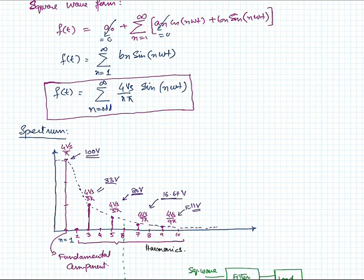So our square waveform is composed of all of those sinusoidal frequencies, odd frequencies. This represents the spectrum of the square waveform. Thank you very much for listening.